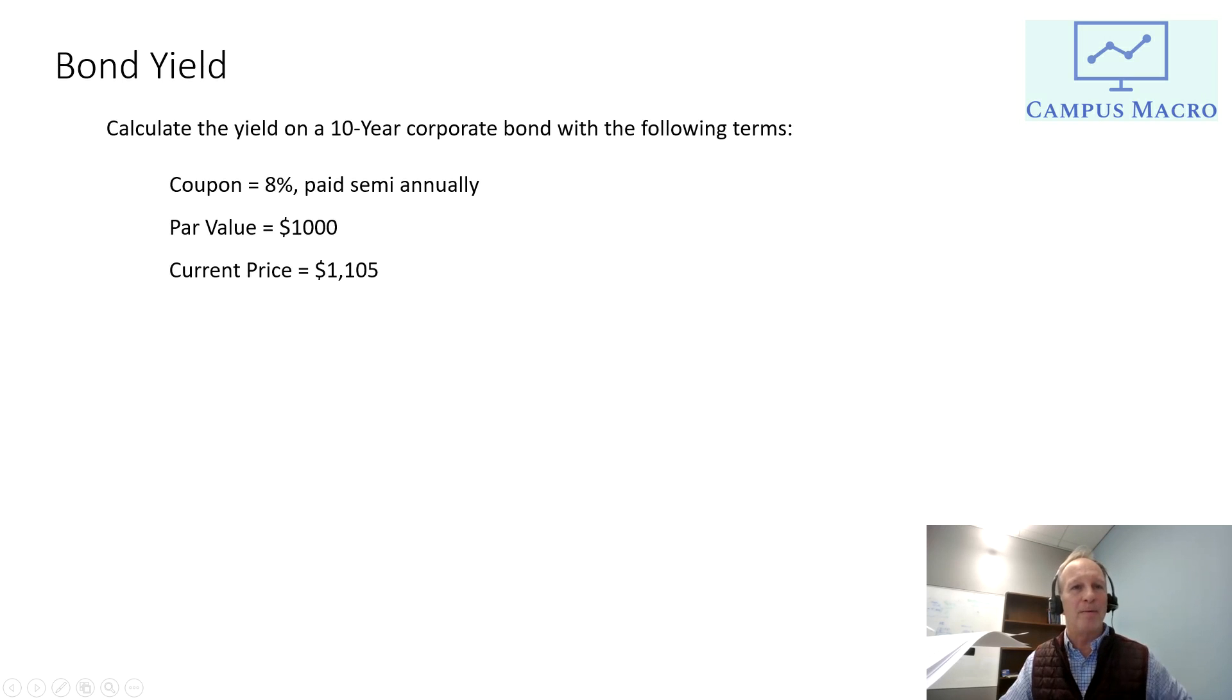The current price, we're going to make this price a high price, $1,105. This price is trading above par. What does that tell you? That tells you that the yield to maturity is going to be below this number. So that's a good sanity check when we finish the problem at the end to make sure that yield to maturity is below the coupon.